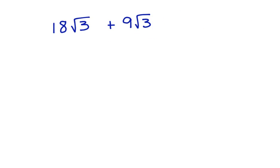Here's another one. Here we have 18 square roots of 3 plus 9 square roots of 3. Again, the square root of 3 is a like term, so we're just going to carry that over into the answer. 18 plus 9 is 27, and so our answer is 27 square roots of 3.